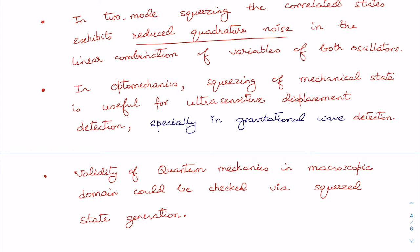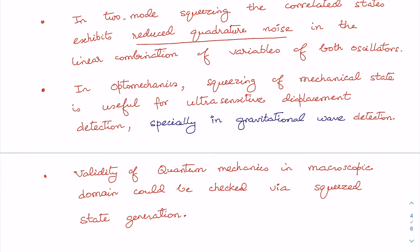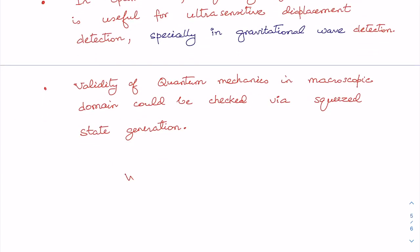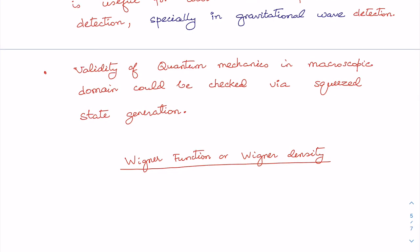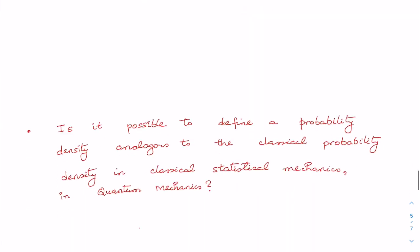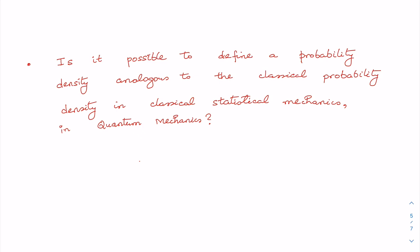Let me now talk about how squeezed states can be generated in the context of optomechanics. But before doing that, let me briefly introduce a useful mathematical tool often used to discuss non-classical states like squeezed states: the Wigner function, also known as the Wigner density. The idea originated from the question: is it possible to define a probability distribution analogous to the classical probability density of classical statistical mechanics in quantum mechanics?